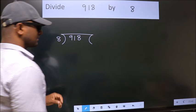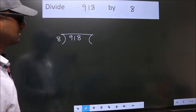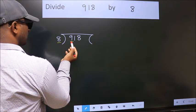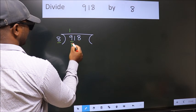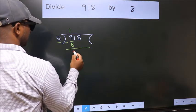This is your step 1. Here we have 9, here 8. A number close to 9 in the 8 times table is 8 once 8. Now we subtract. We get 1.